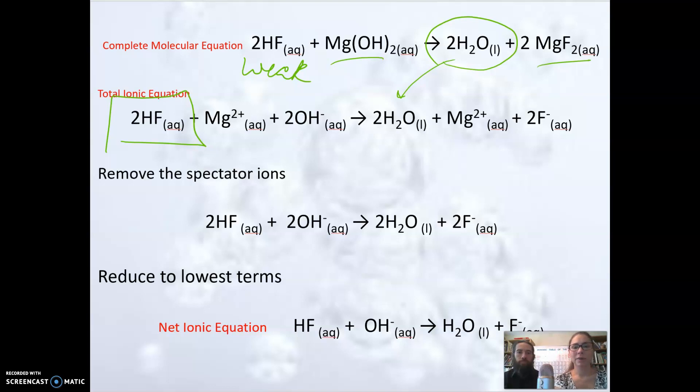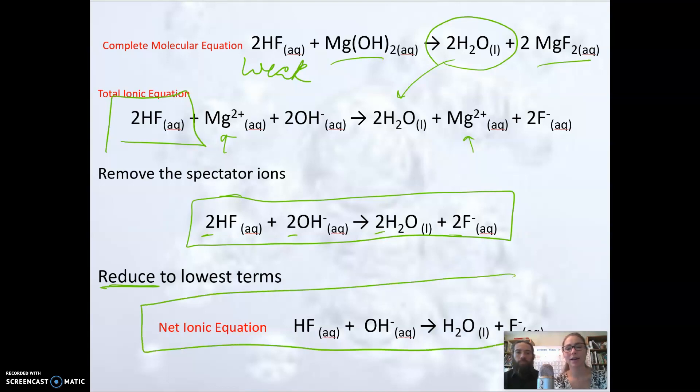We can identify our spectator ions. In this case, it's our magnesium. So if we remove our magnesium, we're left with this reaction, but we're not quite done. Because notice here, we have a 2 to 2 to 2 to 2 ratio here. We can reduce that to lowest terms. And then this is our net ionic equation.